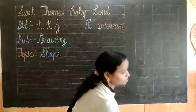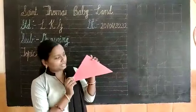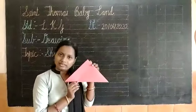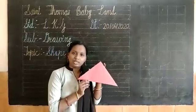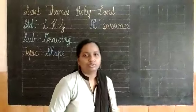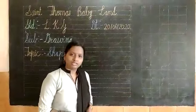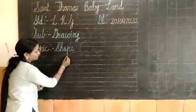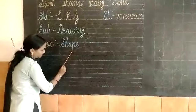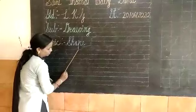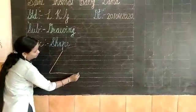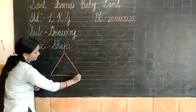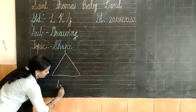Today I will show one more shape. See children, what is this? This is a triangle. So today I will teach you how to draw a triangle. First make a slanting line, one slanting line and one more slanting line. This is your triangle.